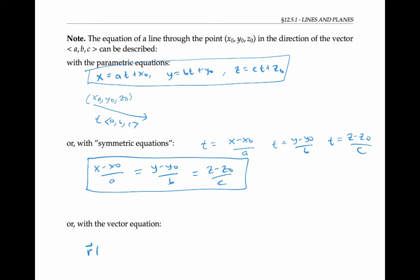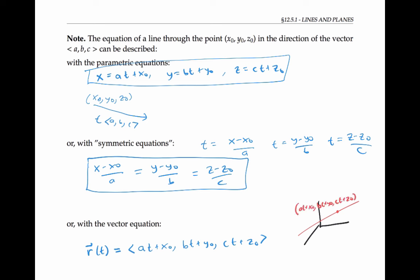Finally, we can describe the line with a vector equation. R is a vector that's a function of t, whose components are given by At plus x-naught, Bt plus y-naught, Ct plus z-naught. The vector equation is very similar to the parametric equations. Geometrically, we think of our line going through space, and a point on the line whose coordinates are given by the parametric equations can also be thought of as the tip of a vector starting at the origin — this is the vector r of t. Physically, as a particle moves along the line over time, we think of a vector with its tail at the origin sweeping along that line with its tip always on the line.